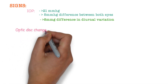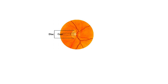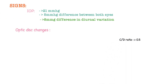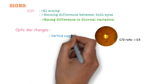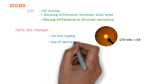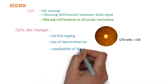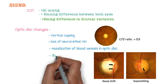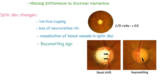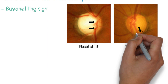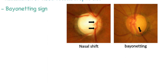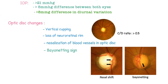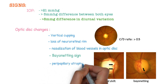Regarding optic disc changes: the optic disc contains an optic cup, which is the white area in the center. In this condition, there is a raised cup-to-disc ratio of more than 0.5. There is vertical cupping and loss of the neuroretinal rim. There is nasalization of blood vessels in the optic disc. There is also the bayoneting sign — when local thinning of neural rim tissue reaches the disc margin, a sharpened rim is produced, and if a retinal vessel crosses this sharpened rim, it bends sharply at the disc edge, creating the bayoneting sign.